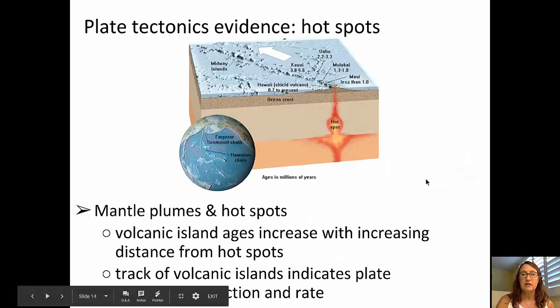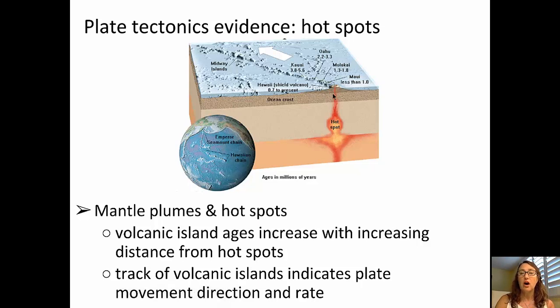An additional piece of evidence comes from hot spots. So in this case, we are looking at the Hawaiian hot spot. You see that there is a mantle plume of hot magma being generated, and breaking through the ocean crust, forming volcanoes on the Pacific Ocean floor, that when they grow to a height sufficient to put them above sea level, they form a Hawaiian island.